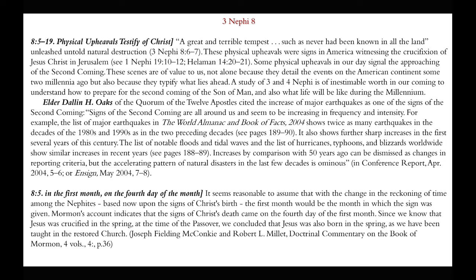Chapter 8, verse 5 — it seems reasonable to assume that with the change in the reckoning of time among the Nephites, based now upon the signs of Christ's birth, the first month would be the month in which the sign was given. Mormon's account indicates that the signs of Christ's death came on the fourth day of the first month. Since we know that Jesus was crucified in the spring at the time of Passover, we conclude that Jesus was born in the spring, as we have been taught in the restored church.